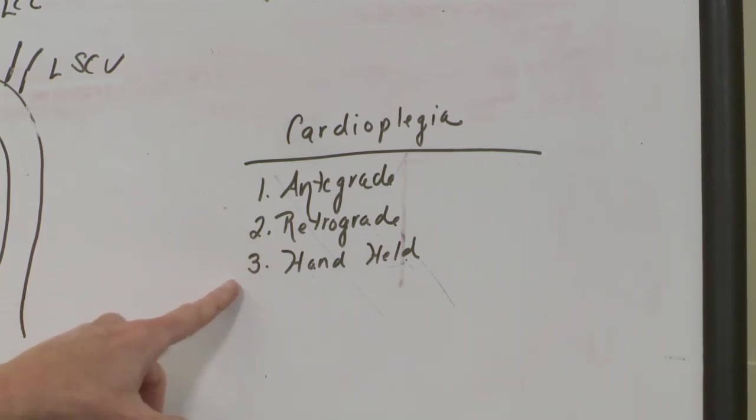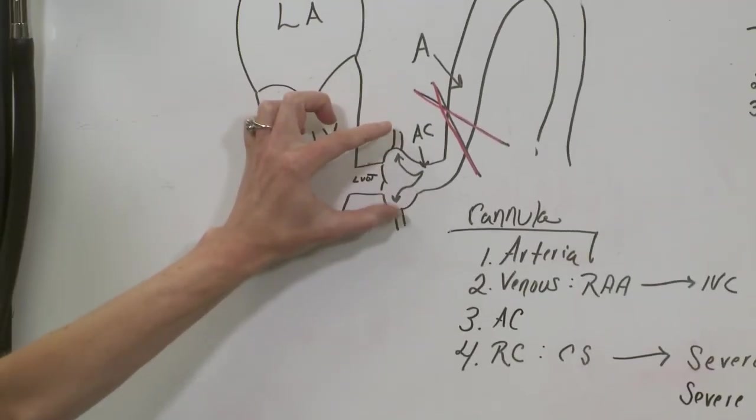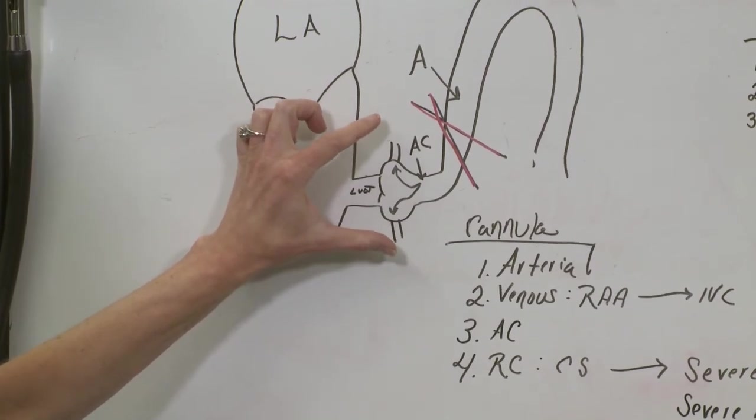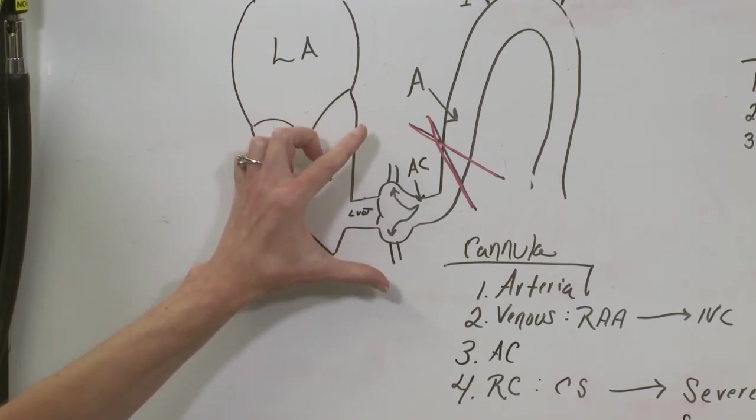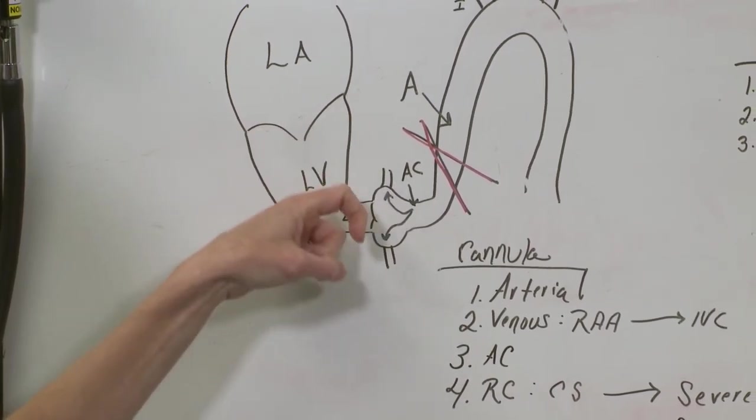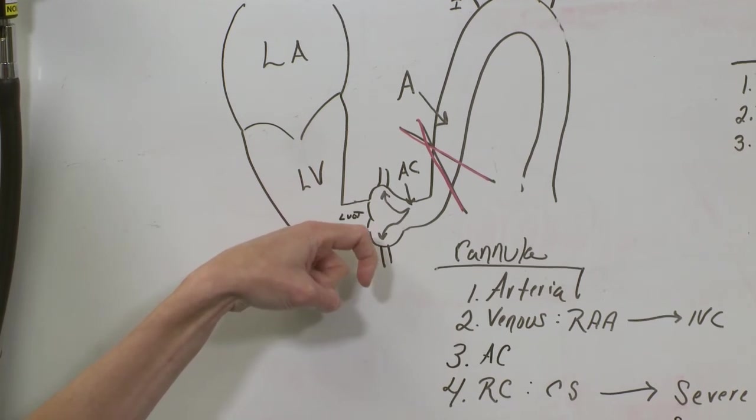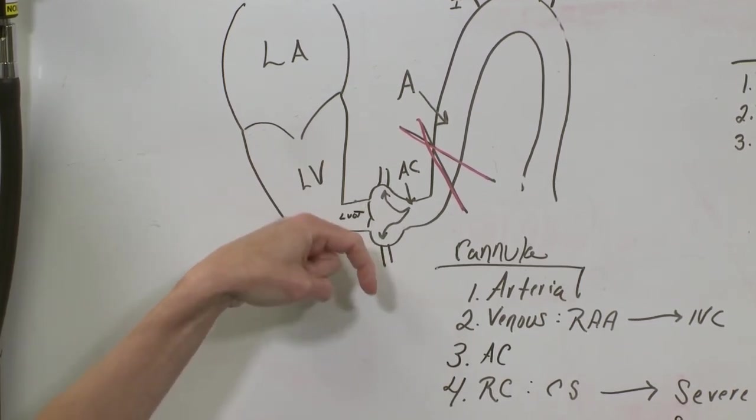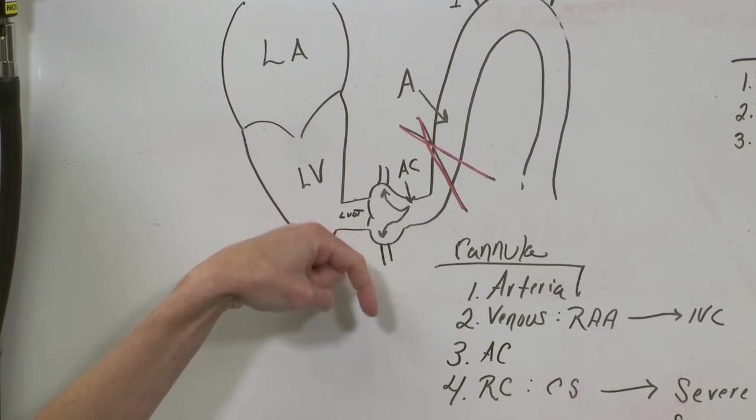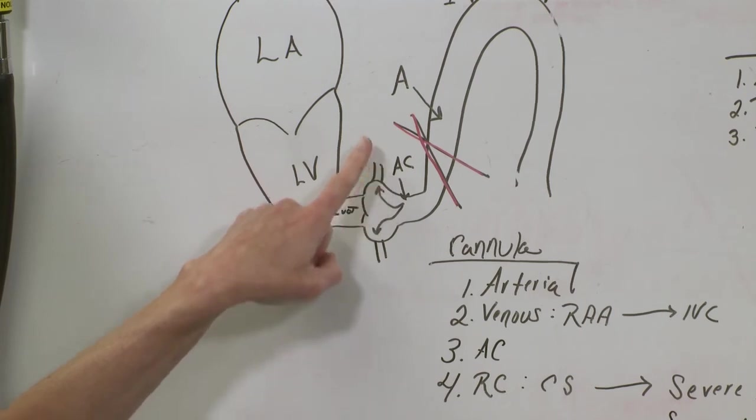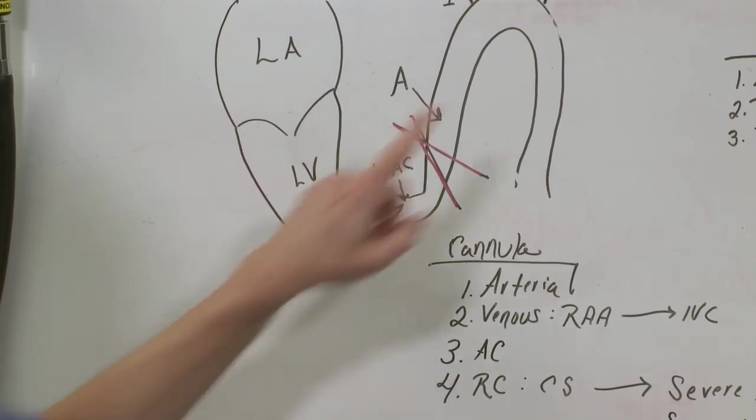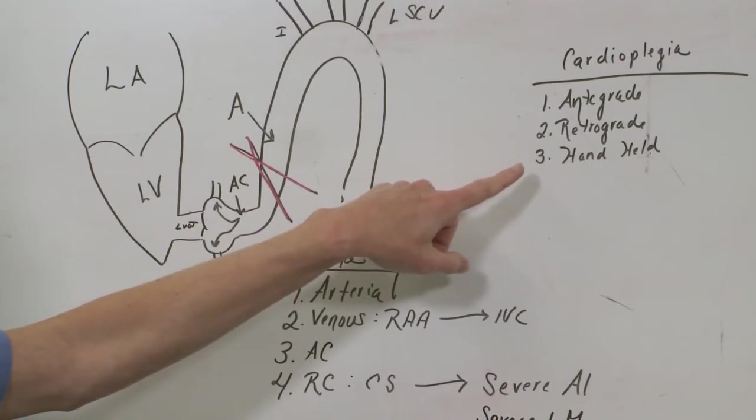The third way is called handheld. This is when the surgeon will come over here, and he or she will actually remove the coronaries off of the aortic root. And it just depends on what procedure you're doing. But if the coronary arteries need to come off, the surgeon can actually place a cannula down these coronaries and they will say handheld right, and then they'll run cardioplegia down the right coronary. And then he or she will say handheld left and they'll run cardioplegia down the left main coronary. So those are the three different ways that the surgeons will give cardioplegia.